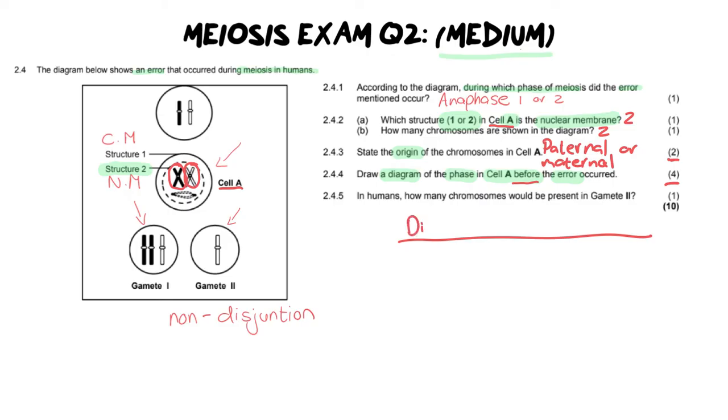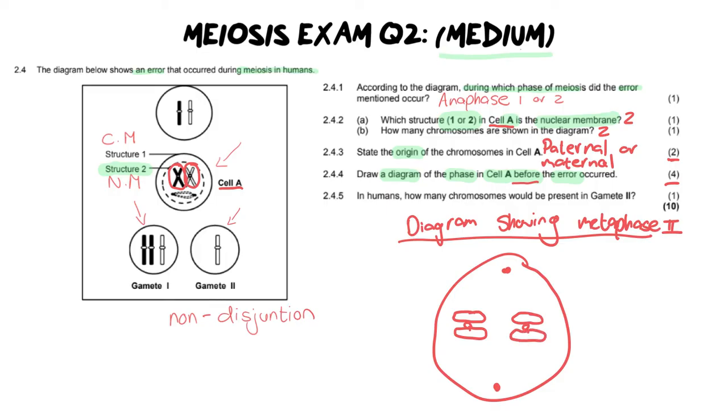So you're going to have to draw your cell. You're going to have to draw your centrioles with your chromosomes lined up on the equator like this. Yes, you will need to draw two because it must match what is in cell A. You're going to draw the spindle fibers coming down and joining to them.